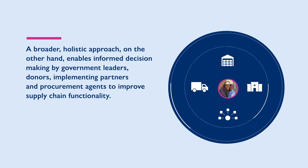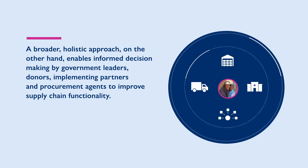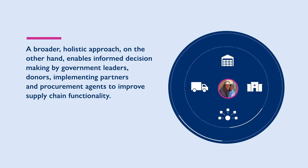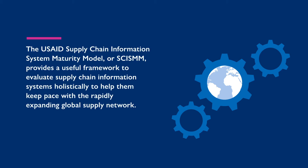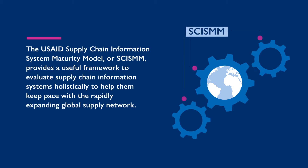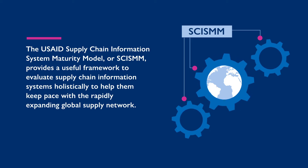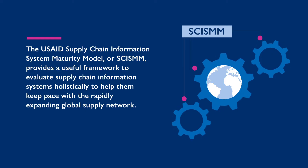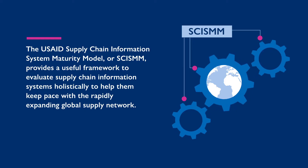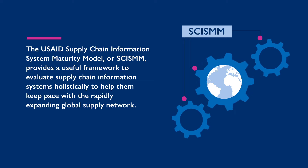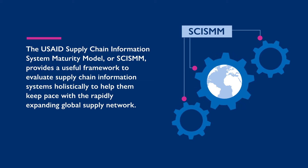A broader, holistic approach on the other hand enables informed decision-making by government leaders, donors, implementing partners, and procurement agents to improve supply chain functionality. The USAID Supply Chain Information System Maturity Model, or SCISM, provides a useful framework to evaluate supply chain information systems holistically to help them keep pace with the rapidly expanding global supply network.